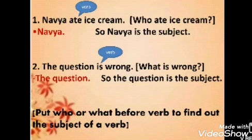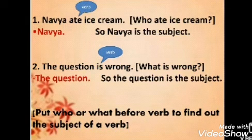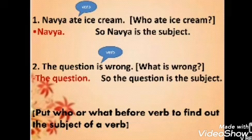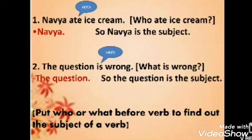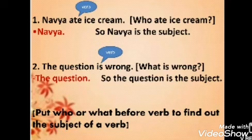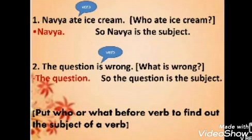Second example: 'The question is wrong.' What is wrong? The question. So here the question is the subject. To find the subject, put 'who' or 'what' before the verb. In the first example, the verb is 'ate' — who ate ice cream? In the second, what is wrong? So before the verb you have to put 'who' or 'what' to find out the subject.